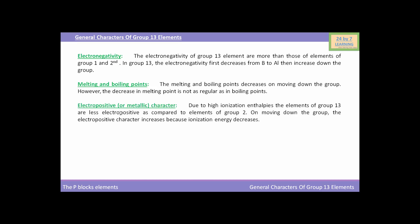Now, we will see the electropositive or metallic character. Due to high ionization enthalpies, the elements of group 13 are less electropositive as compared to elements of group 2. On moving down the group, the electropositive character increases because ionization energy decreases.